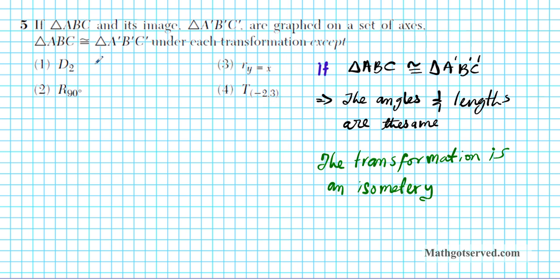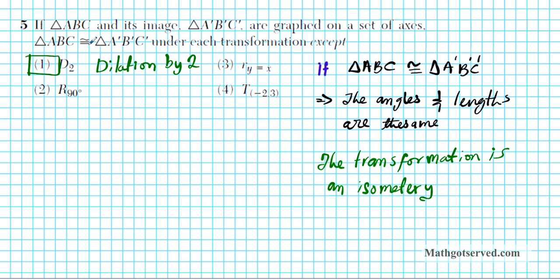D2 means a dilation by a factor of 2. Dilation increases the side lengths by a factor of 2. If you increase the side lengths of the original triangle by 2, the result will not have the same dimensions, so this transformation is not an isometry — it changes the length and does not preserve congruency.